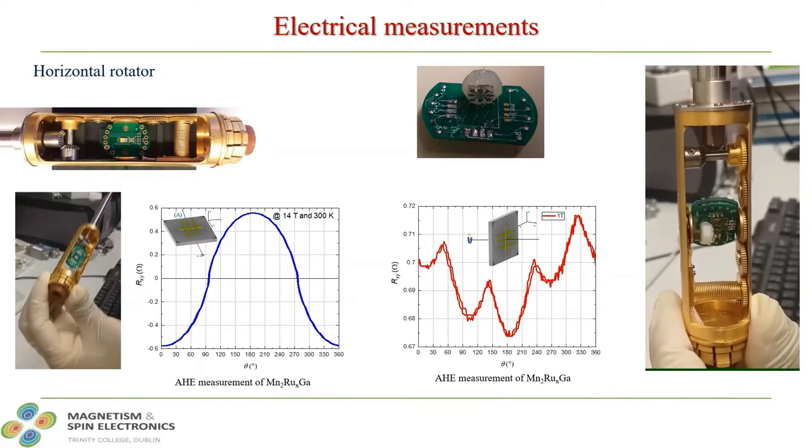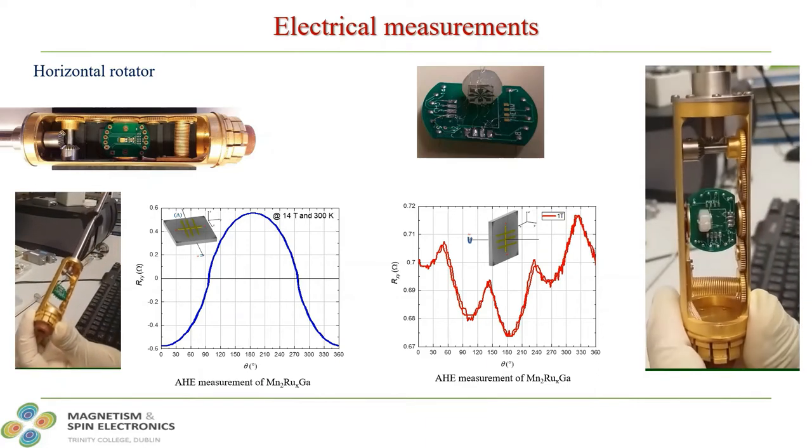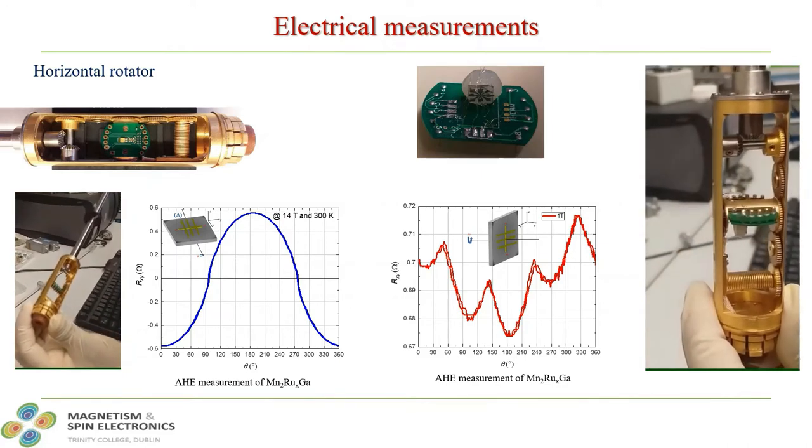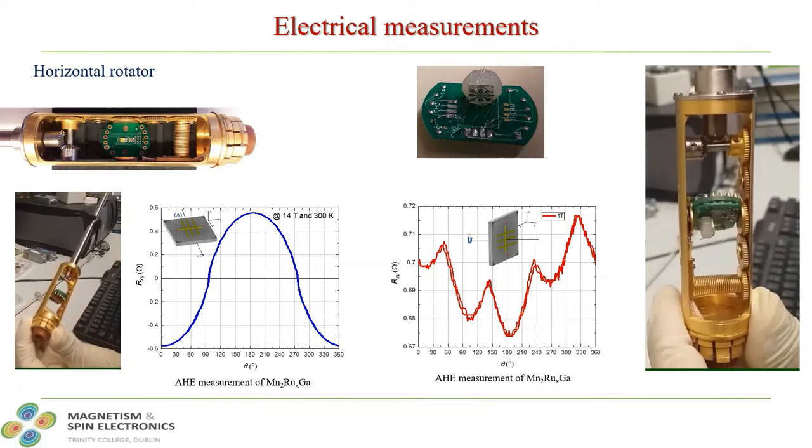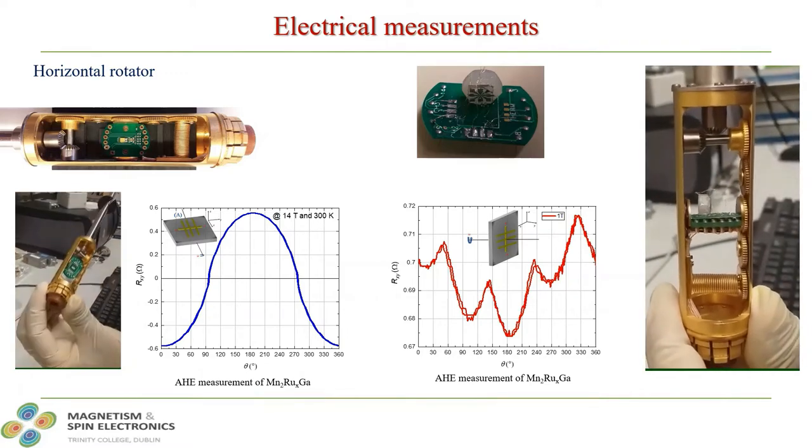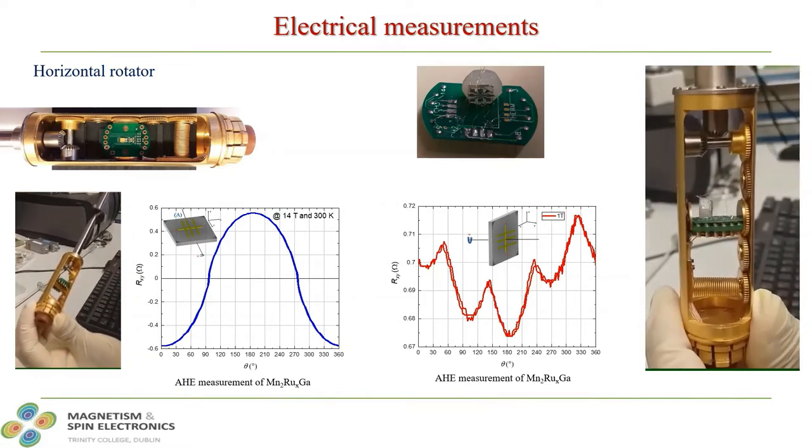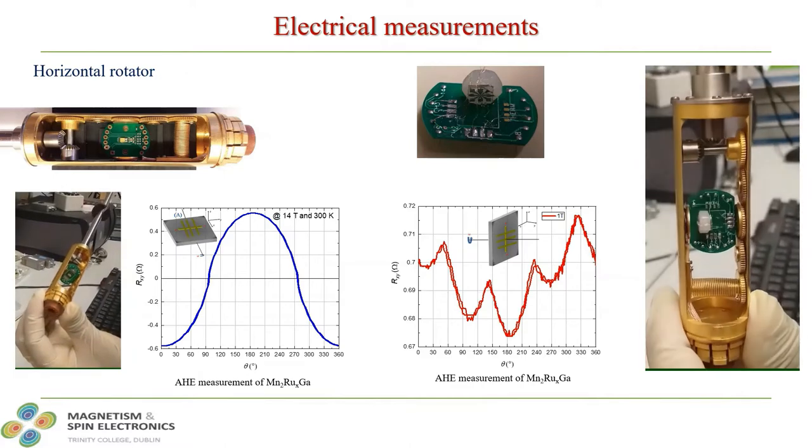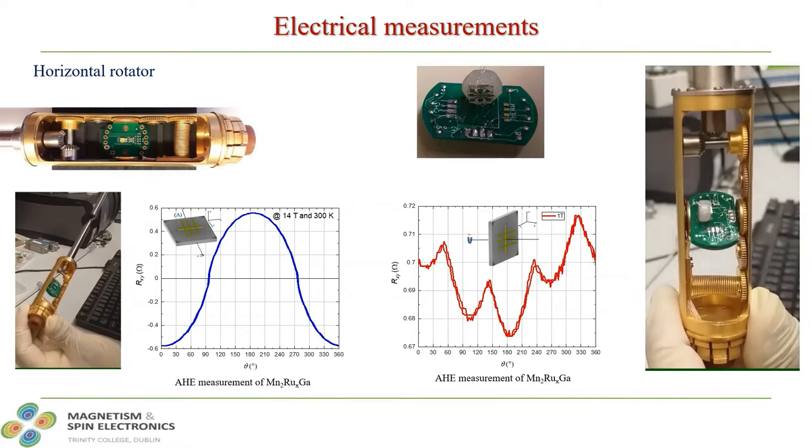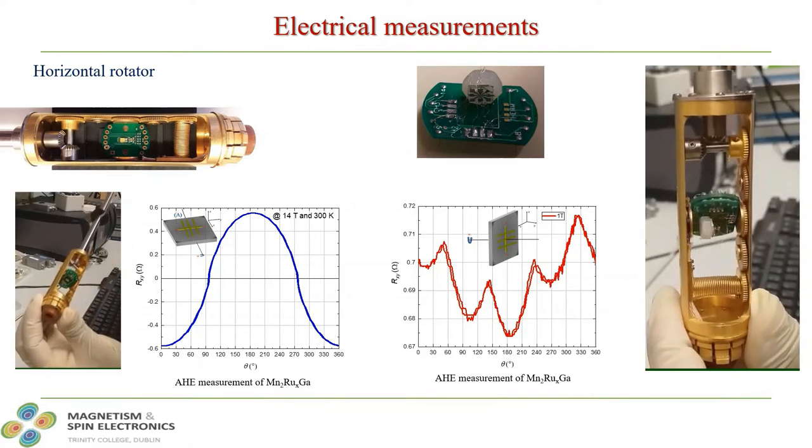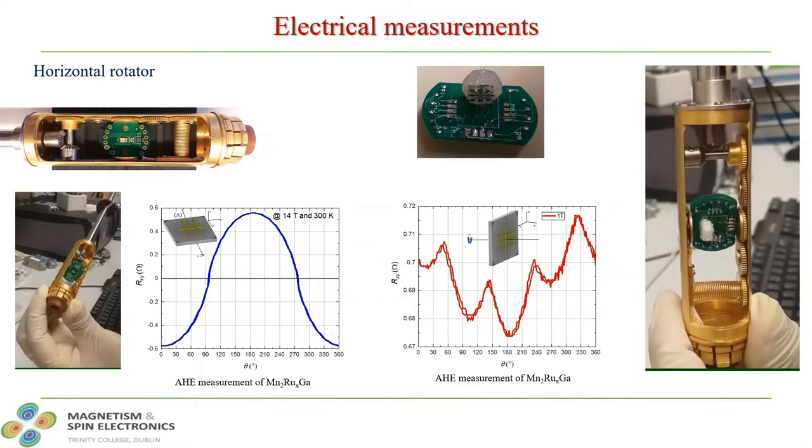Moreover, the horizontal rotator allows us to rotate the sample in the presence of magnetic field. As shown here, on the left-hand side, the rotation perpendicular to the field. An example of such measurement is shown in the blue curve. Here, the anomalous Hall effect of manganese-germanium-gallium thin film is shown, which indicates the balanced torque experienced by magnetization vector as a function of angle. The in-plane rotation of the sample is shown on the right-hand side. The resultant 4-fold oscillation is shown in the red curve.